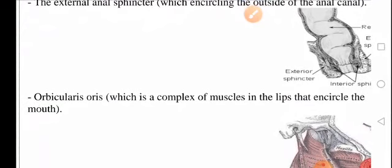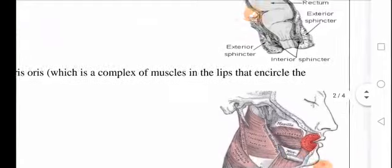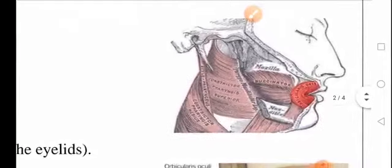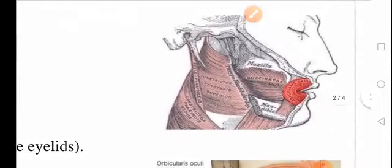Orbicularis oris muscles, this is a complex of muscles in the lips. They allow you to control your mouth movements, for example during talking and eating.